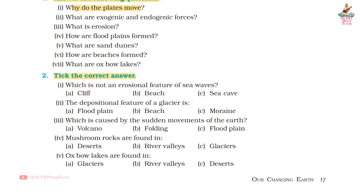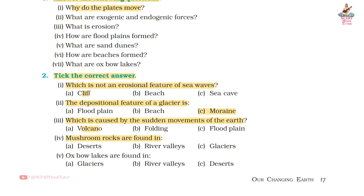Tick the correct answer. Question 1: Which is not an erosional feature of sea waves? Answer: A — Cliff. Question 2: The deposition feature of a glacier is? Answer: C — Moraine. Question 3: What is caused by the sudden movements of the earth? Answer: A — Volcano. Question 4: Mushroom rocks are found in? Answer: A — Deserts. Question 5: Oxbow lakes are found in? Answer: B — River valleys.